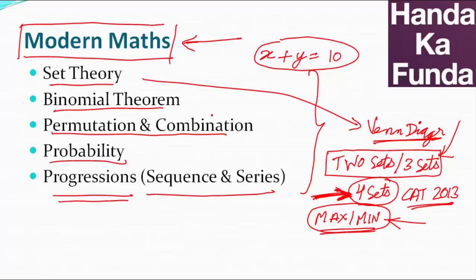Binomial theorem is something that comes in very handy. Maybe if you spend half an hour on it, that's good enough just to understand how this works and what a few of the applications can be. But this becomes very important for the topics that follow. Say, for example, permutation and combination and probability.